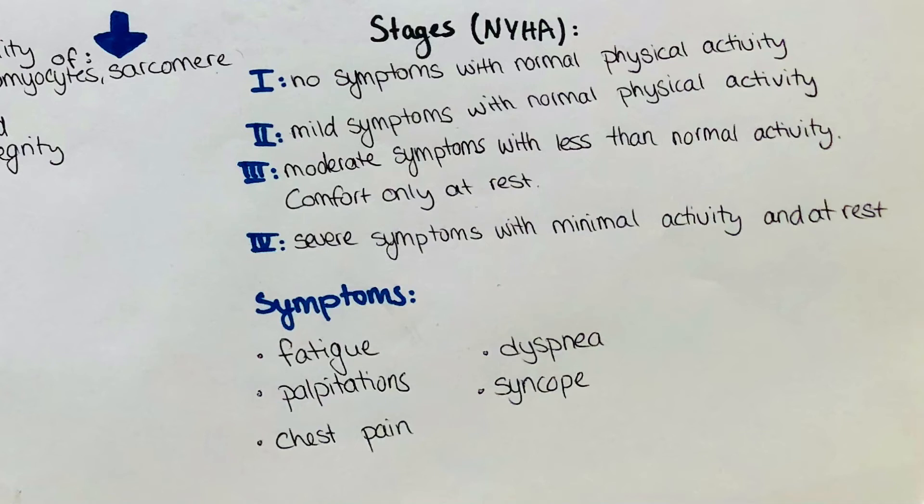The severity and extent of symptoms helps us to determine how far the disease has already progressed. The New York Heart Association, short NYHA, formulated a classification which is frequently used in clinical practice. They divided the disease into four stages, one being the mildest and four being the most severe. In stage one, patients have none of the symptoms I mentioned earlier and are able to perform normal physical activity.